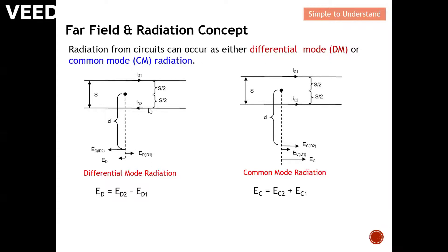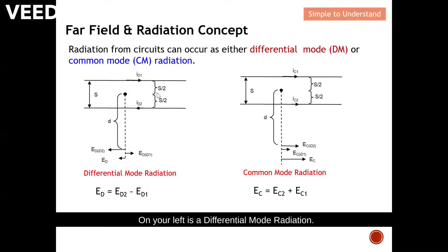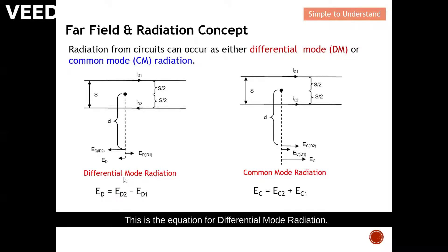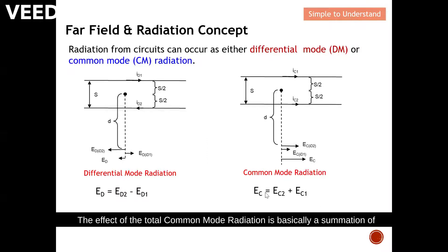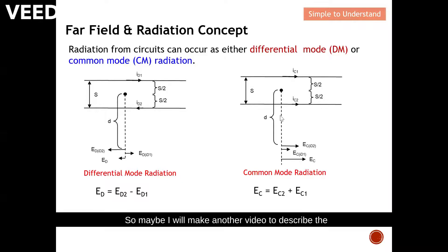This is a diagram to explain the difference between differential mode and common mode radiation. On your left is differential mode radiation — the key difference is the magnitude is the same but the phase is 180 degrees different. This is the equation for differential mode radiation. As for common mode, both the magnitude and the phase are the same, and the total common mode radiation is basically a summation of the two.